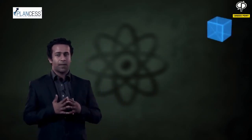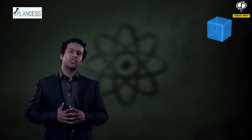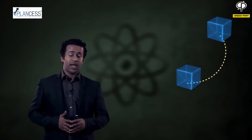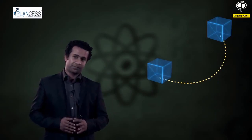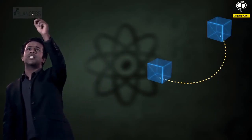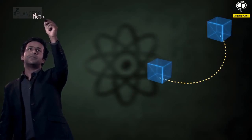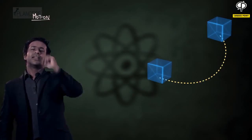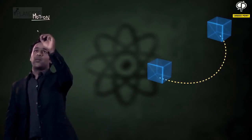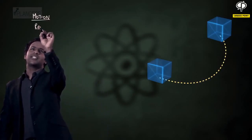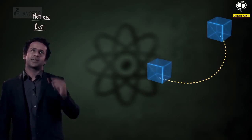You already know a few things about motion, but let's start from the basics anyway. A body is said to be in motion when it moves, and when it stops moving, it is said to have come to rest. So, the word motion means that the object or the body is in motion, and when it is not in motion, it is said to be at rest.